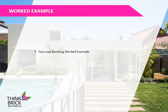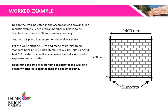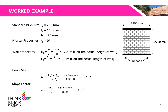We will now go through a worked example on how to determine the two-way bending capacity for an unreinforced brick wall. This example requires us to design a wall with a total out-of-plane loading of 1.5 kPa. The wall is 2.7m high, made of standard brick units, using full bedding of M3 mortar. The wall spans horizontally at 2.4m and is supported on all four sides. Using a standard brick size, the cracked slope and slope factor is calculated. Both horizontal and vertical edges are laterally supported, so we use half the actual height and length. The cracked slope is calculated to be 0.717 and the slope factor is calculated to be 0.64.